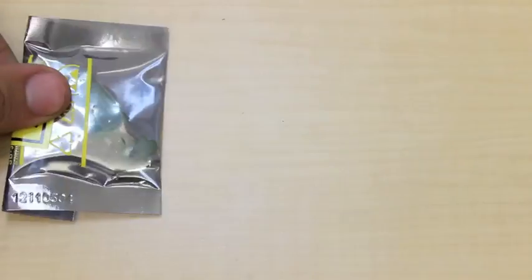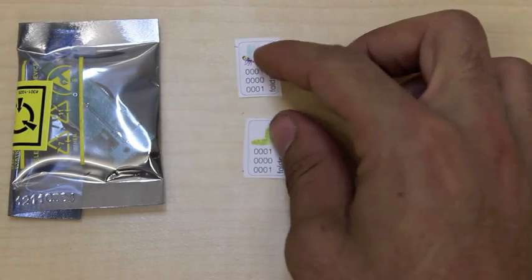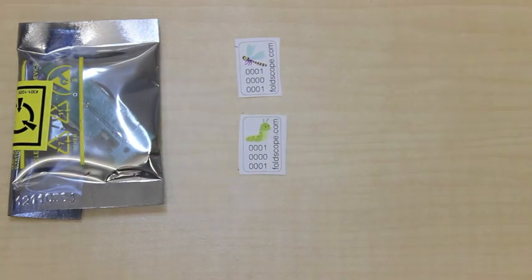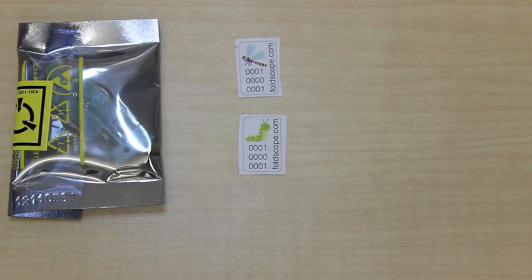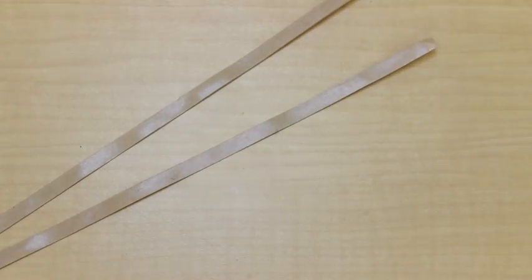We also included one light module. And two unique identification stickers, which will allow you to register your Foldscope on our website. And two strips of double-stick tape.